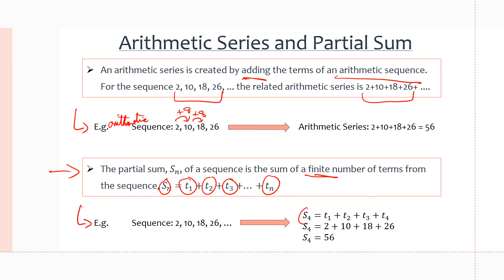If we take the partial sum of S4, only to the fourth term, we add the first term, second term, third term, and fourth term. We start at the first term, we end at the fourth term, because n equals 4 in this case, as we can see in the subscript.